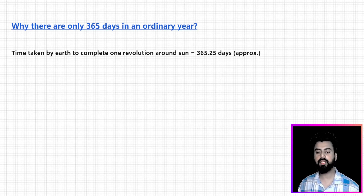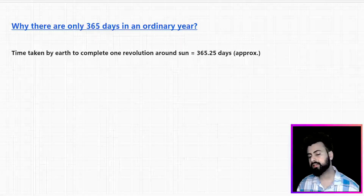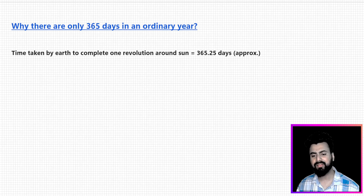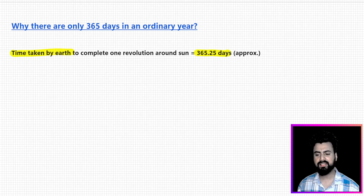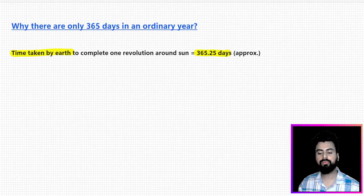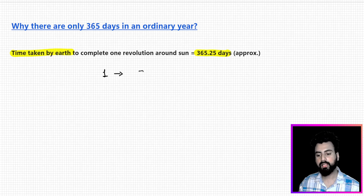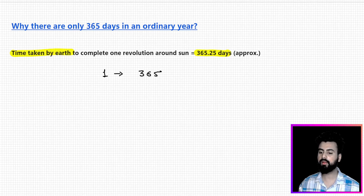Before starting with type 2 problems, there are a few things we need to understand. The first point is why there are only 365 days in an ordinary year. The reason is that the time taken by Earth to revolve around the sun is 365.25 days. Due to this, we consider only 365 days in an ordinary year, throwing away the 0.25 days.